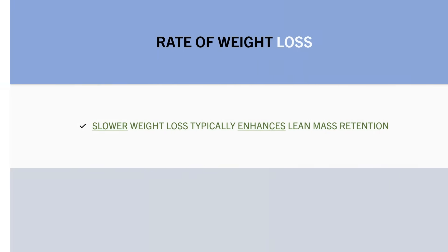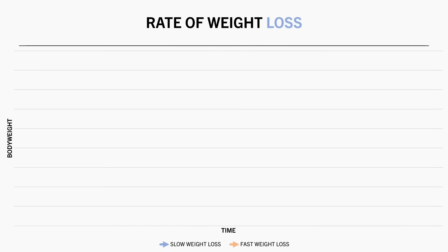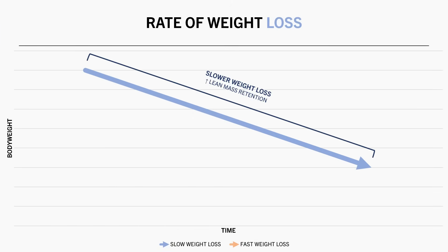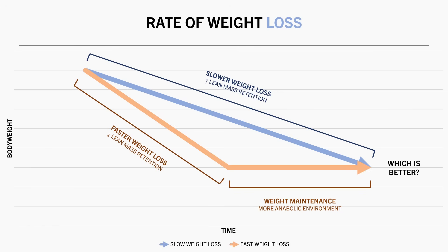Although it is evident that a slower rate of weight loss enhances lean mass retention within the time frames of the weight loss period, it is unclear if this would result in meaningful body composition differences long-term. While a slower rate may allow us to retain more lean mass, it also takes longer, which delays the time we can enter maintenance calories and provide a superior hypertrophic stimulus. Whereas if we lose weight at a faster rate, we get to our target body weight sooner, meaning we can return to maintenance calories and potentially regain any lean mass sacrificed. So it is unclear if there is necessarily a long-term physiological advantage to slower weight loss.